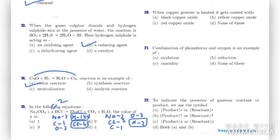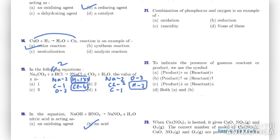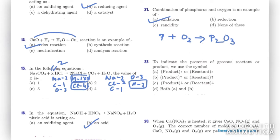Question twenty: when copper powder is heated it gets coated with — black copper oxide, yellow copper oxide, red copper oxide, or none? It actually turns black, so the answer is black copper oxide. Question twenty-one: combustion of phosphorus and oxygen — is it oxidation, reduction, rancidity, or none? We have P + O2 → P2O5, so it is an oxidation reaction.